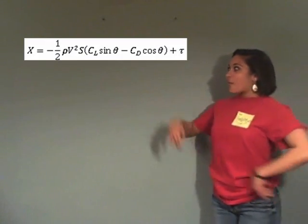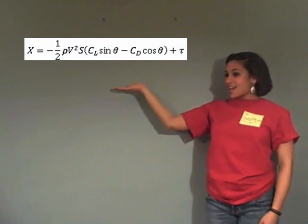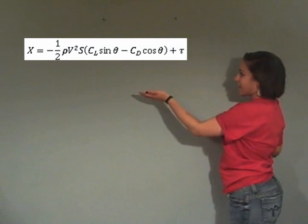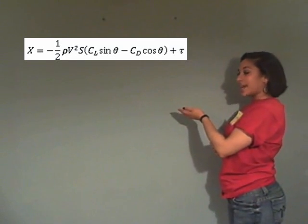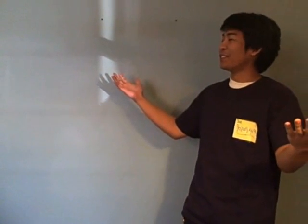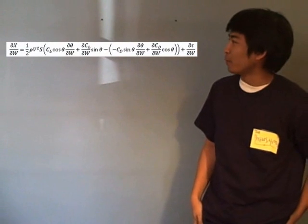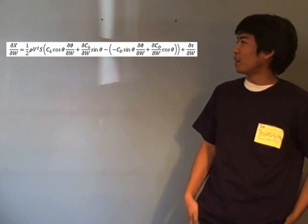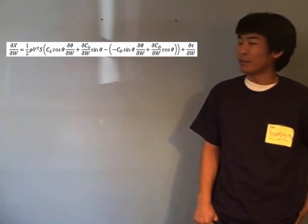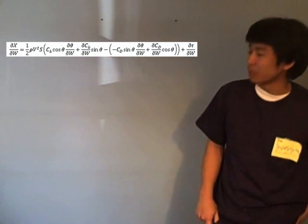Why don't we call x an equation that uses one half rho v squared s times cl sine theta minus d cosine theta plus tau. Oh look, it's partial derivative man! Thanks partial derivative man! Now we're left with one half rho v squared s, and then we take the partial derivative of the lift coefficient and we get that first term in parentheses.